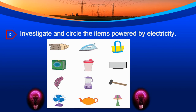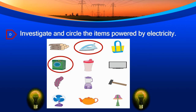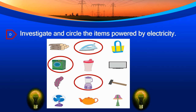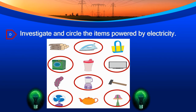Investigate and circle the items powered by electricity. Very good. The iron, the boom box, the blender, a flat screen TV, an alarm, and a fan. Good job, students.